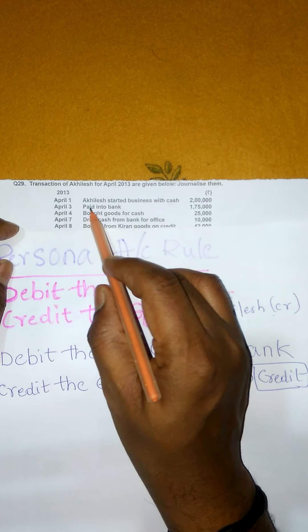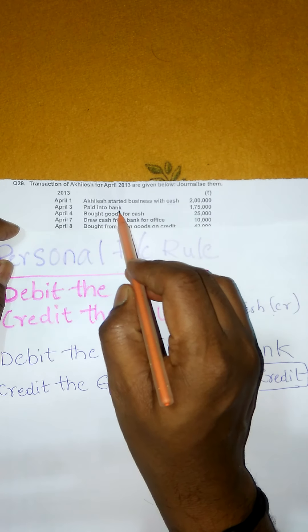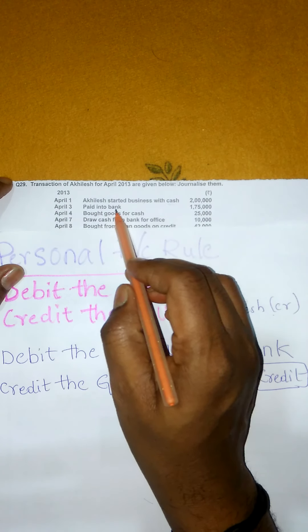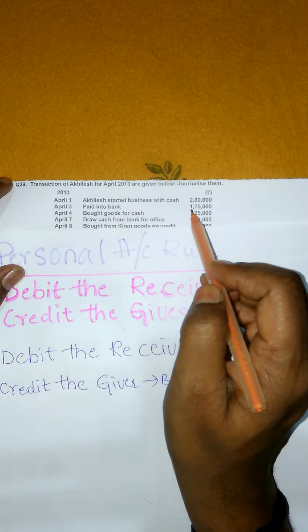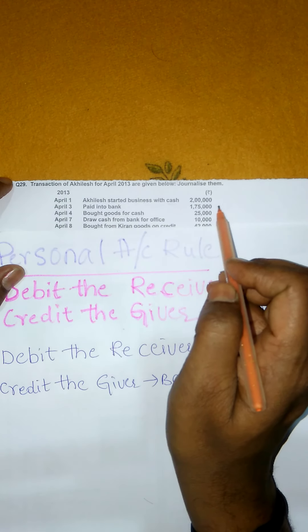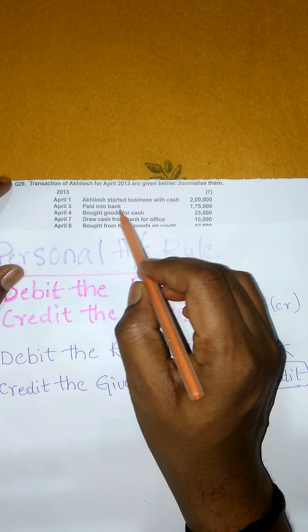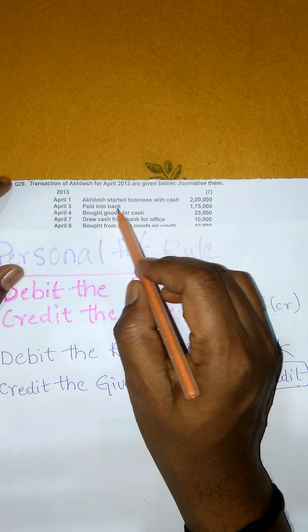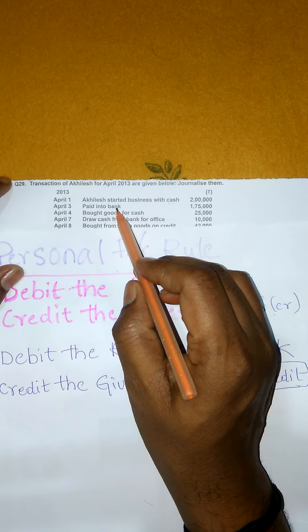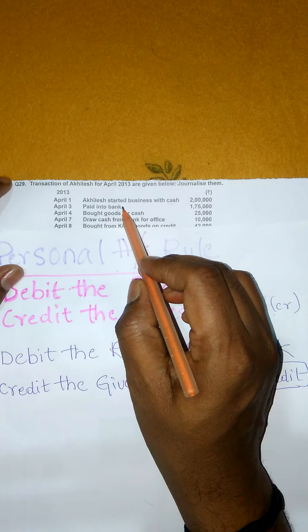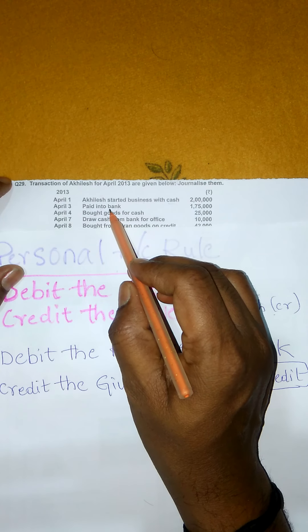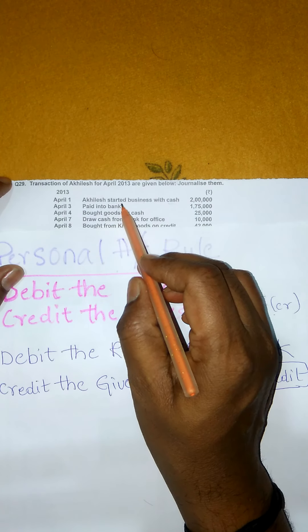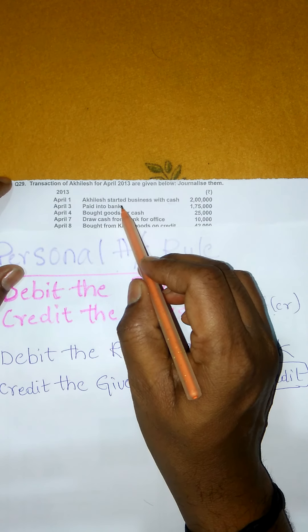Next transaction choupiraadamu jaruthundi — paid into bank. April 3rd ki paid into bank 1 lakh 75,000. Ikkada bank name iwadam jhariginthi, bank oka institution. Ikkada name raawadan jhariginthi kawatti, as per personal account ga idhi manang consider chesthamu.